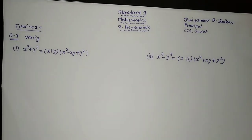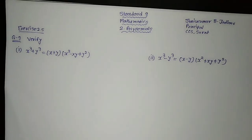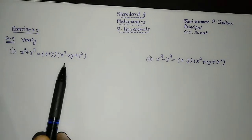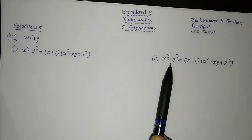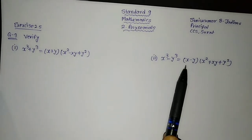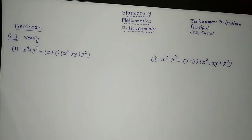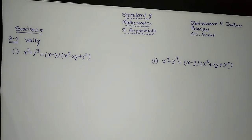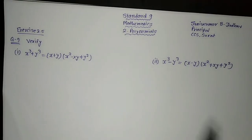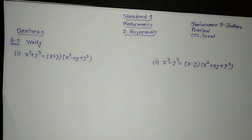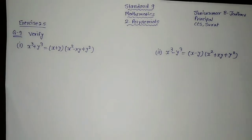Verify: x cube plus y cube is equal to x plus y into bracket x square minus xy plus y square, and x cube minus y cube is equal to x minus y into bracket x square plus xy plus y square. Hello friends, myself Sunil Kumar Jadav, principal of C.C.S.A. Sarvajanic English High School, Chandra 9. Mathematics Chapter No. 2, Polynomial, Exercise 2.5, Question No. 9 — that we are going to discuss in this video.